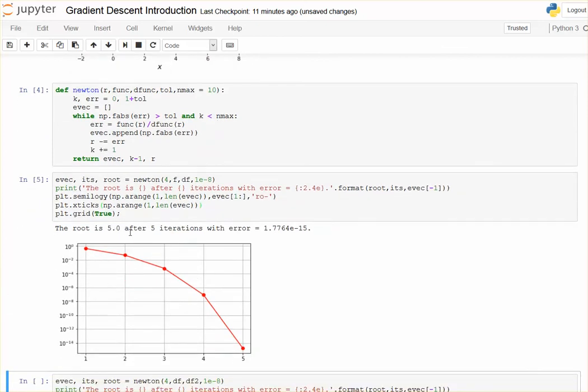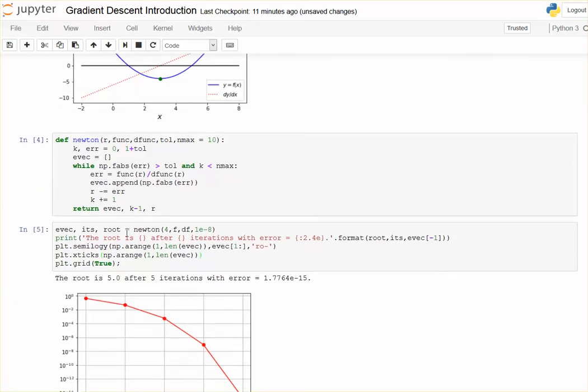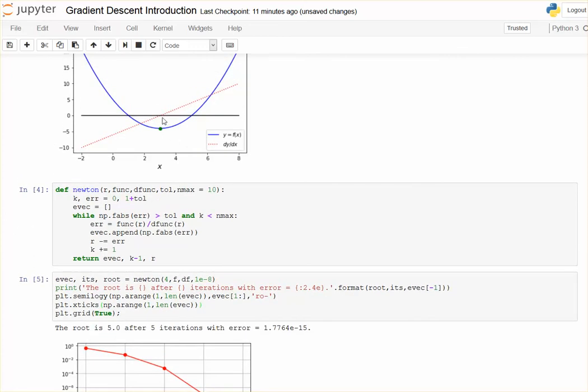So the root is five, which is clearly wrong after five iterations. Oh, nope. The root is five. Yes. I'm sorry. I was looking at the minimum three. Yeah, the root is five. There it is. So the four converged to five after five iterations. And look at that error. 10 to the minus 15th.